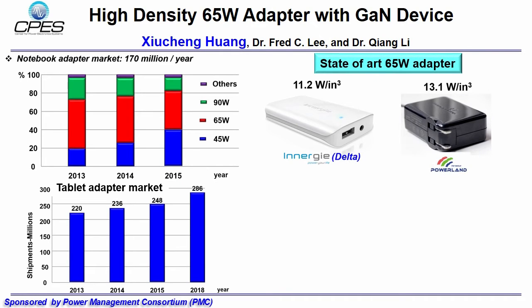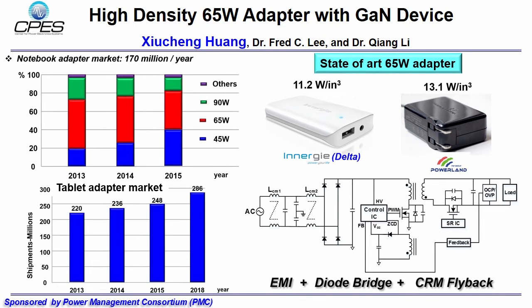Let's take a look at the state-of-the-art adapters. One is from Delta and the other is from PowerLand. They both use flyback topology due to simplicity and low cost. The flyback is designed to operate at critical mode to improve efficiency. However, the switching frequency is below 250 kHz using silicon MOSFETs to maintain high efficiency. Therefore, the passive components including the transformer, output filter, and EMI filter are large at low frequency. The power density is around 11 to 13W per cubic inch.